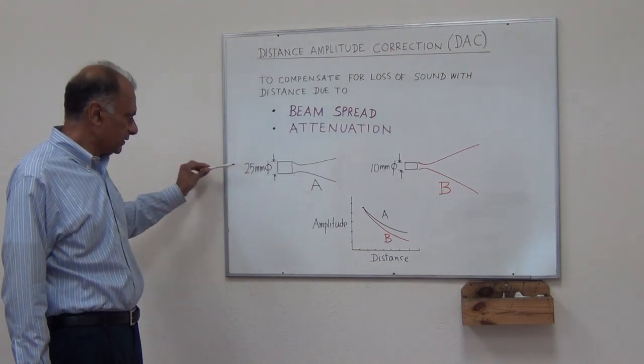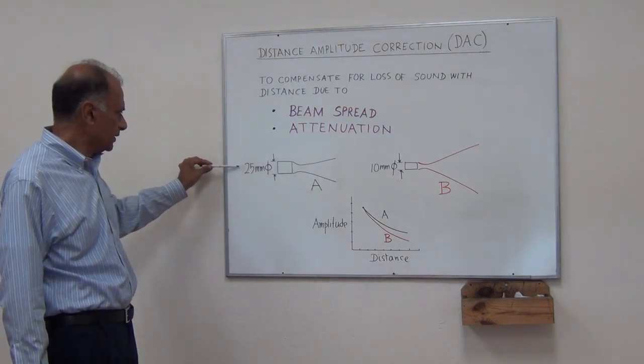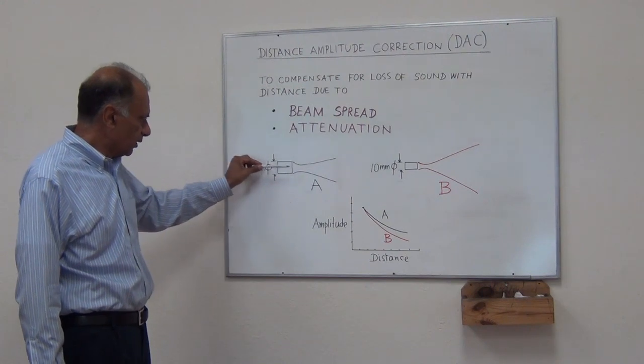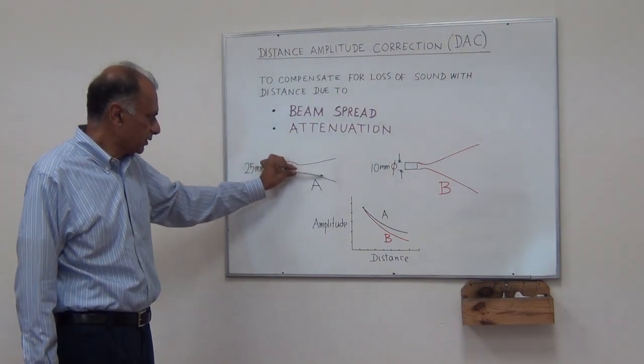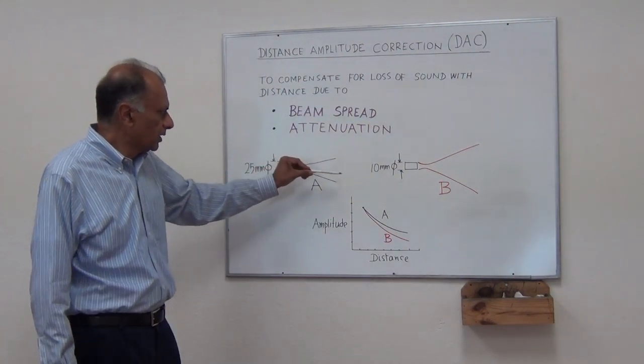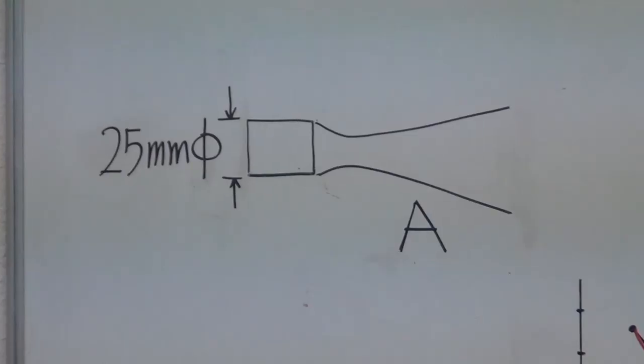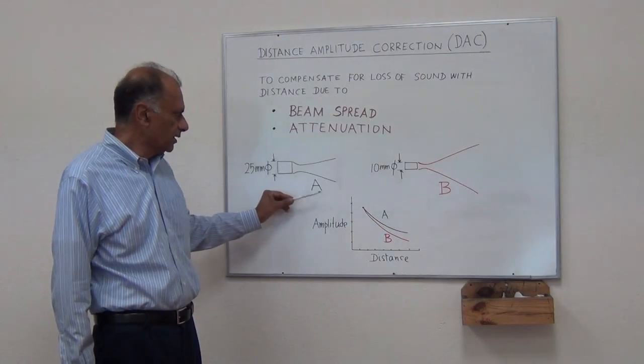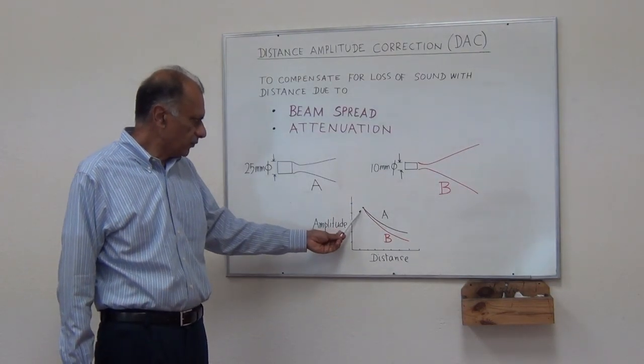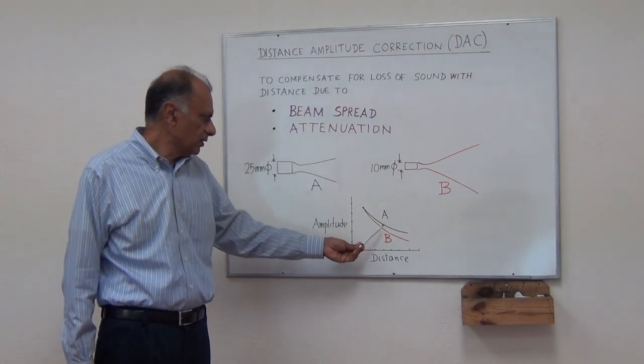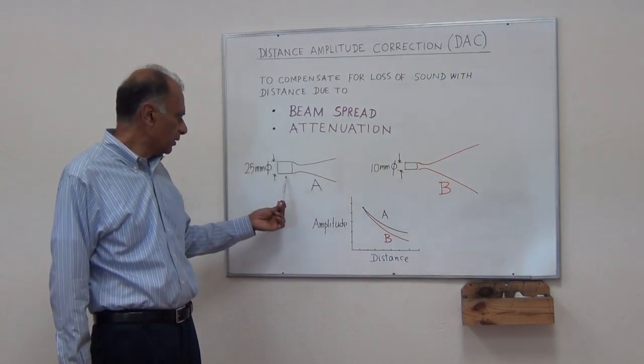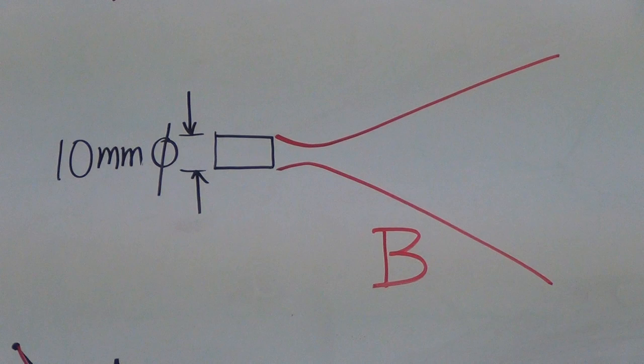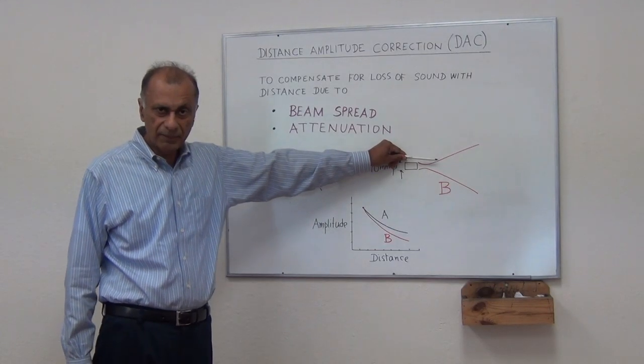We have two examples here. One probe is 25 millimeters with a smaller beam spread, compared to a probe which is 10 millimeters in diameter with a larger beam spread. If we do a distance amplitude correction curve, the loss of sound with distance will be lower for the 25mm probe because it has a smaller beam spread compared to the 10mm probe.